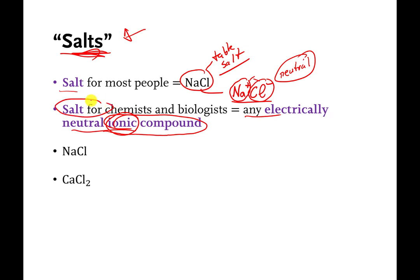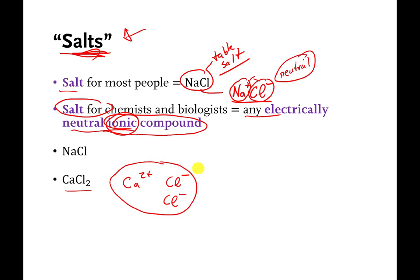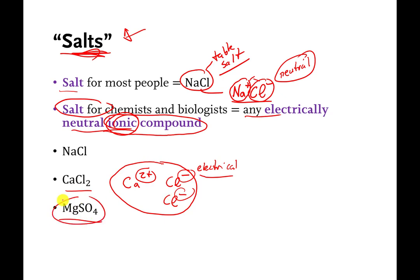There are many other salts. For example, calcium chloride is made of a calcium ion with a charge of +2 and two chloride ions each with a charge of -1. Put them all together and they are electrically neutral, because the +2 charge is cancelled by the two negatives on the chlorides. Similarly, magnesium sulfate (MgSO4) is another type of salt.